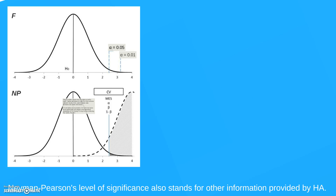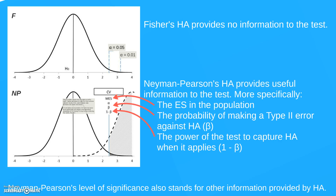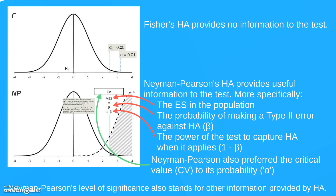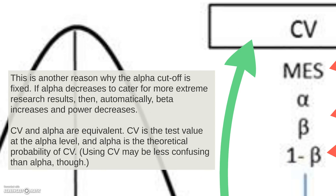Neyman-Pearson's level of significance also stands for information provided by the alternative hypothesis. Fisher's alternative hypothesis provides no information to the test — their test doesn't have a proper alternative hypothesis. But Neyman-Pearson's alternative hypothesis does provide information: it provides information about the effect size in the population, but also about the probability of making a type 2 error, or beta, and the power of the test to capture this alternative hypothesis when it applies. Neyman-Pearson also prefers the critical value over its probability alpha, which is another reason why the alpha cutoff must be fixed.